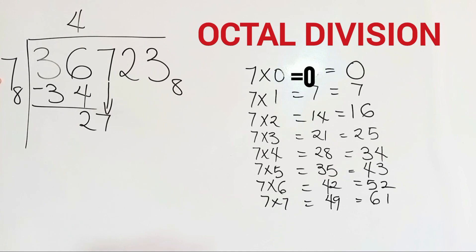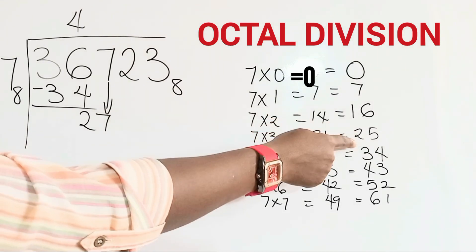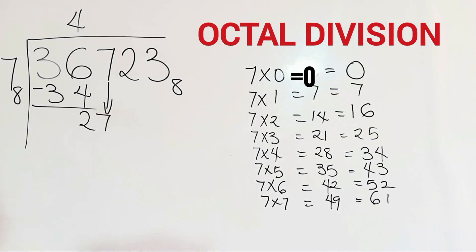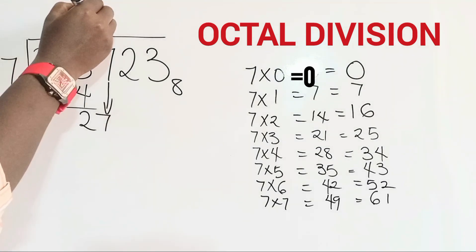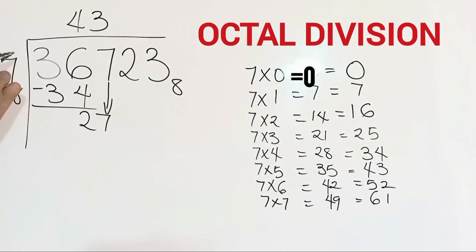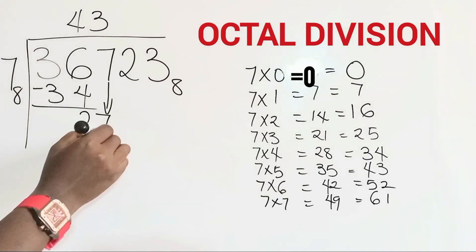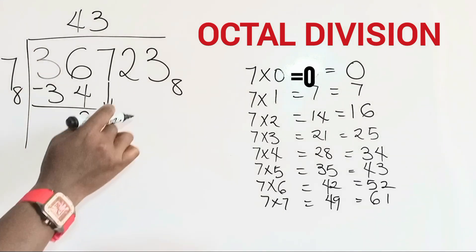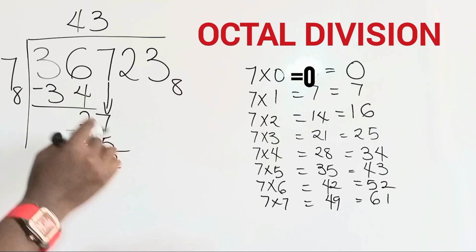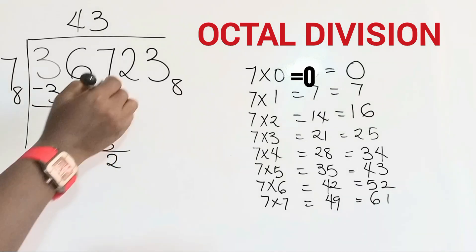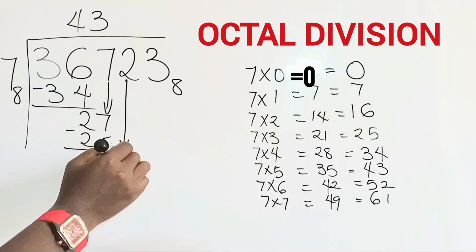Then we divide 27 by 7. 27 divided by 7, we check on our list, the closest is 25, and that's 7 times 3. So we write our 3 here. 3 times 7 equals 25 in base 8. We subtract, 7 minus 5 will give us 2, 2 minus 2 is 0. Then we bring in our next digit, which is 2.